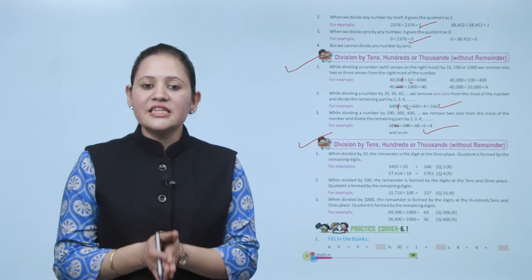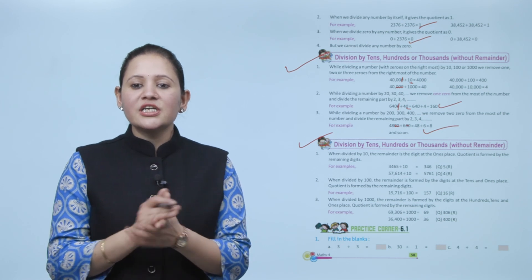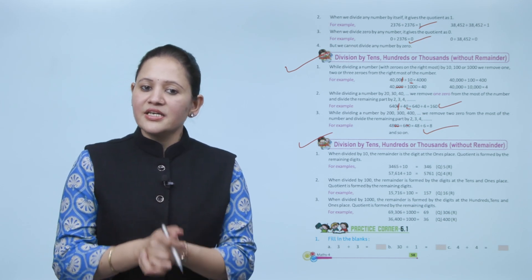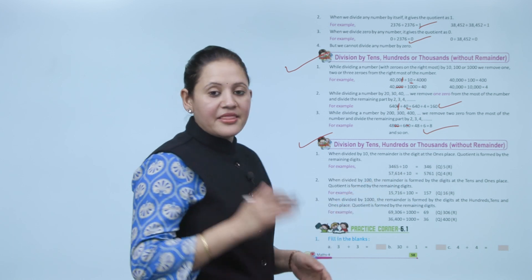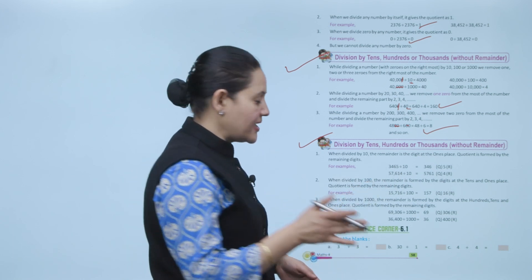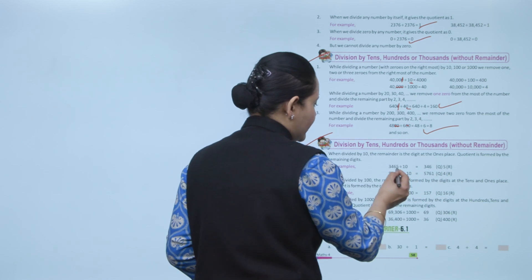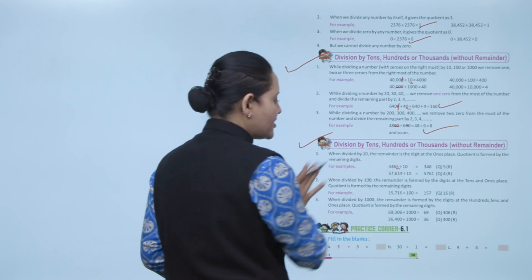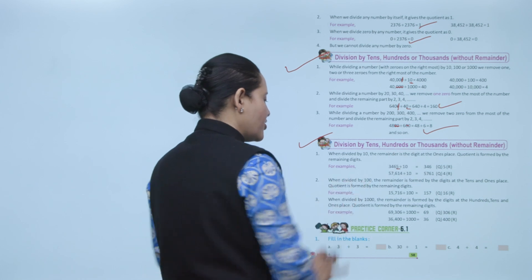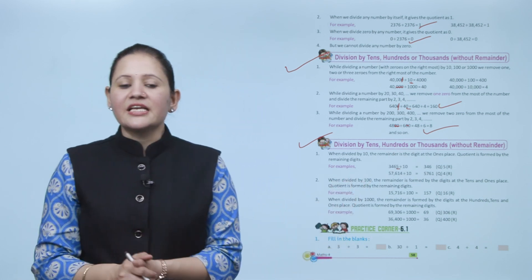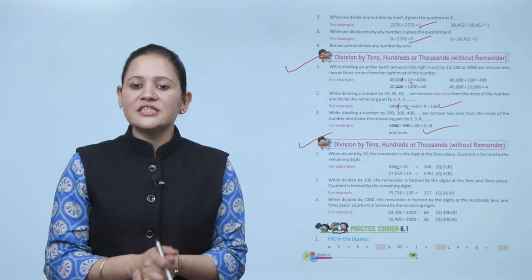Next is division by tens, hundreds, and thousands with remainder. When dividing by 10, the remainder is the digit at the ones place, and the quotient is formed by the remaining digits. For example, if we are dividing by 10, the digit at ones place is our remainder — like here, 5 — and the rest of the digits, 346, form our quotient.